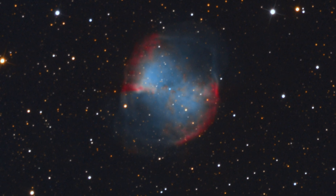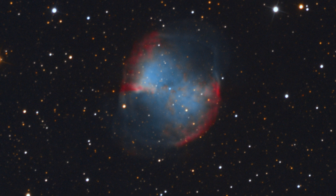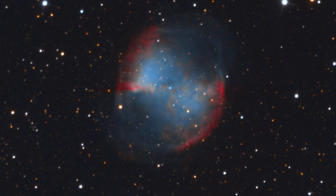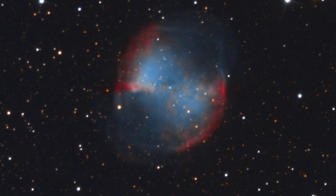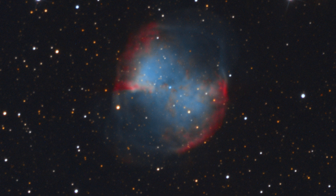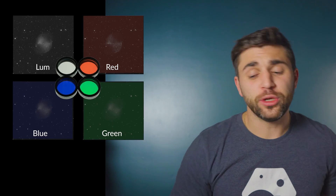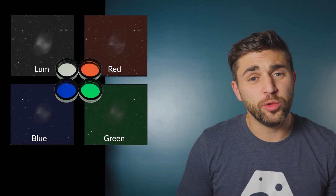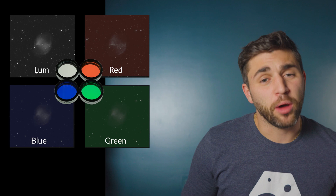There is one caveat: you don't need narrowband filters to image an emission nebula or a planetary nebula. If you want a very realistic or natural looking photo, you don't need to use any filter at all if you're using a one-shot color camera, and you can use LRGB filters if you're using a dedicated monochrome camera.